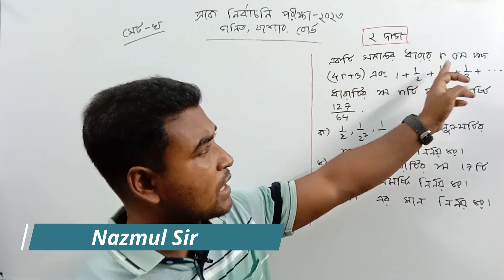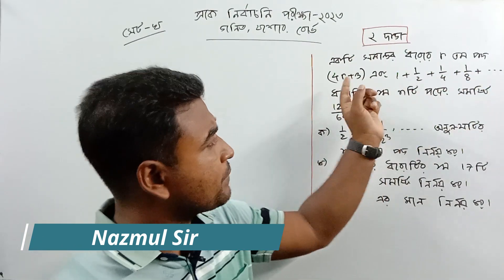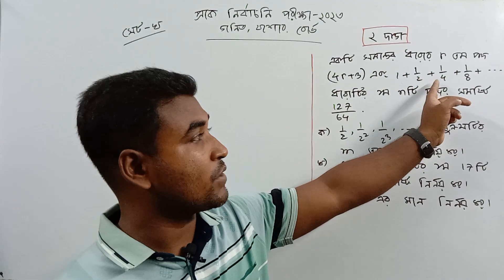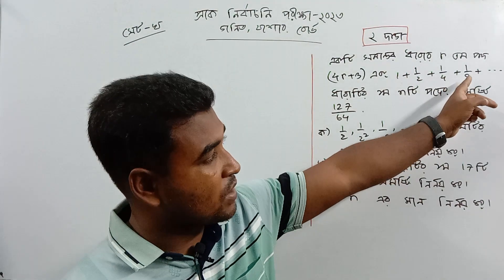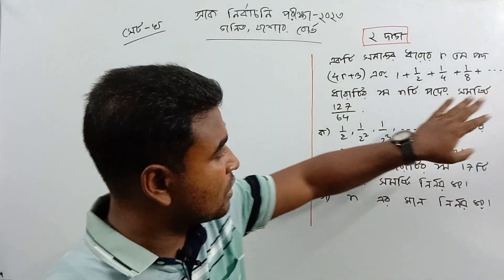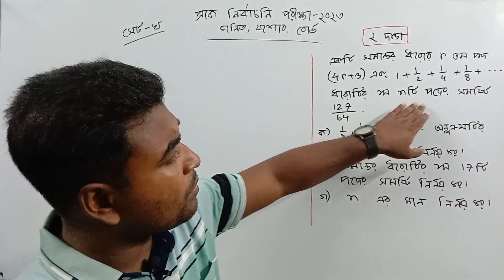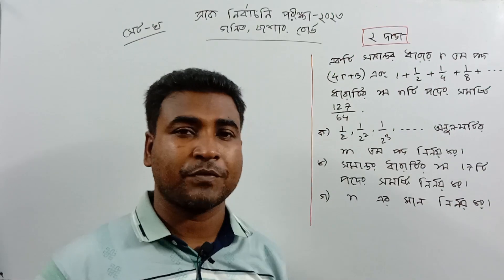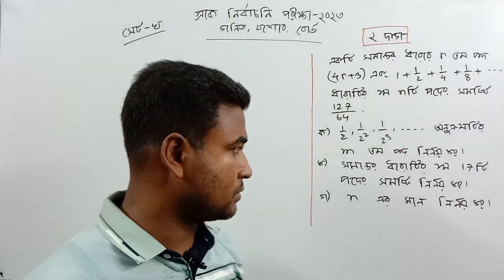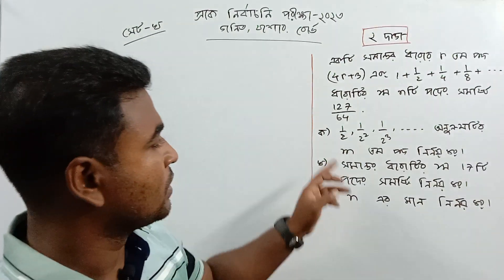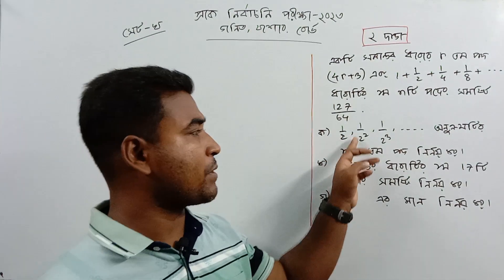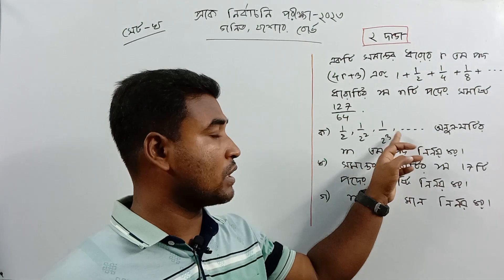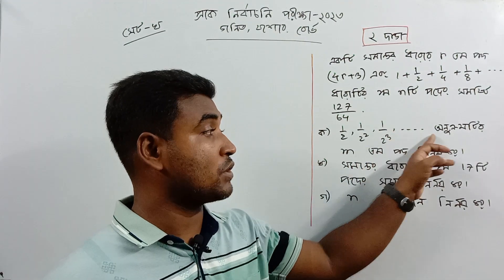So, 1×2×r×3 is equal to 4r plus 3. Or, 1 plus 1 by 2 plus 1 by 4 plus 1 by 8 plus dot dot dot is equal to a geometric series of type 1 by 2, 1 by 2 squared, 1 by 2 cubed, dot dot dot.